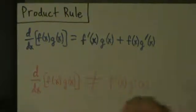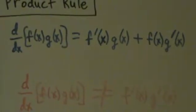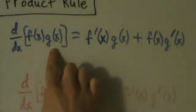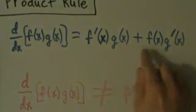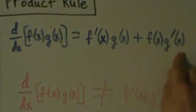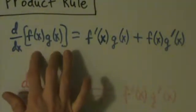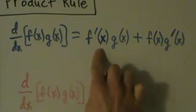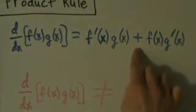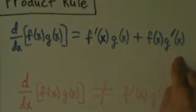The product rule says the derivative with respect to x of f times g equals the derivative of f times g plus f times the derivative of g. So if you want to take a derivative of a product of two things, that's going to be the derivative of the first times the second, plus the first times the derivative of the second.